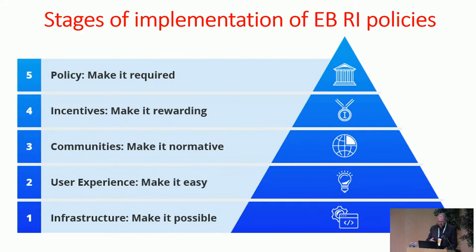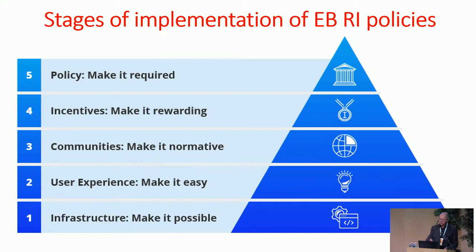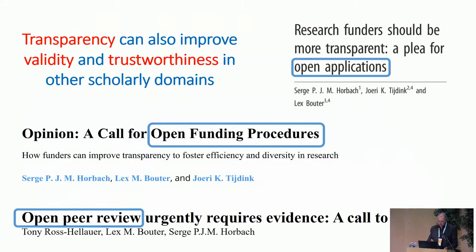And when you do implementation — this is from Brian Nosek, who borrowed it from others — implementation is not easy. Once you have a proven effective intervention, you should first make it possible, then make it easy. Libraries in Europe are great at this. But you need help from the communities to make it normative, then rewarding, and lastly required. That is the way you implement a new thing. You need to collaborate with the leadership of universities and the academic community for the higher steps in this pyramid.